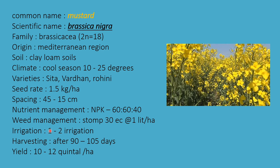Irrigation: 1 to 2 irrigations for the entire crop. Harvesting after 90 to 105 days, when pods are filled. Yield is 10 to 12 quintals per hectare.